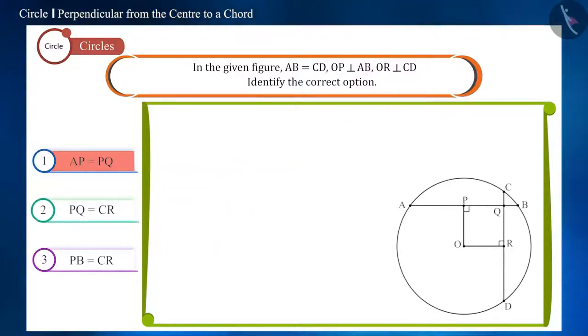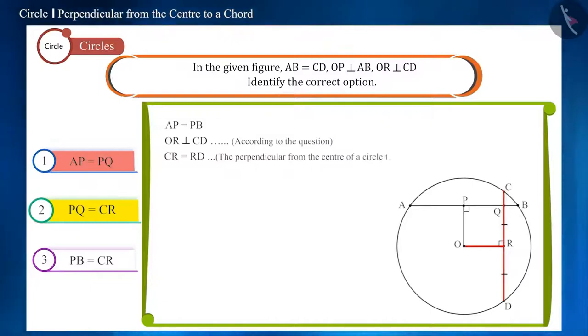Let's move ahead and see the second option. From the first option, we know that AP and PB are equal. And we are given that OR is perpendicular to chord CD. So, CR will be equal to RD because the perpendicular drawn from the center of a circle to a chord bisects the chord.